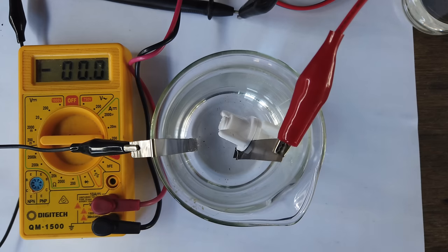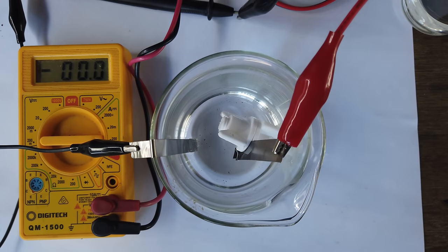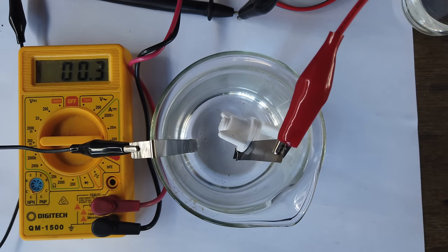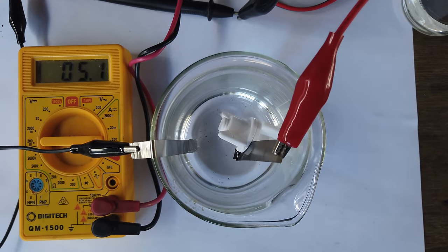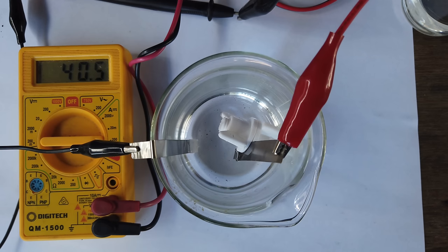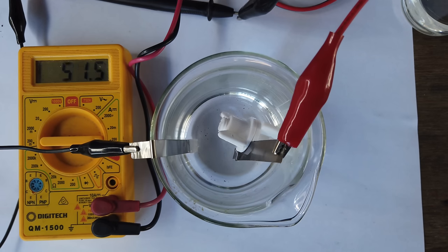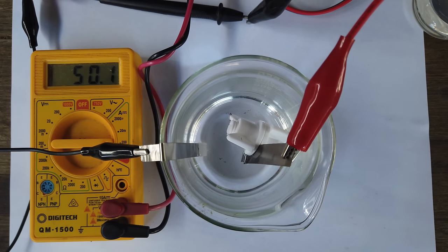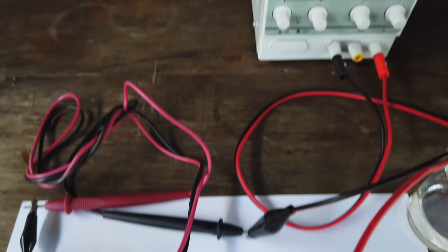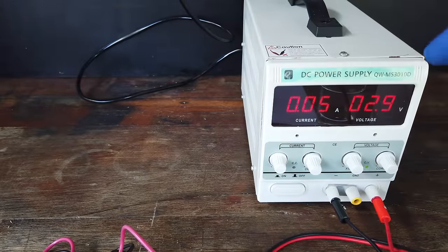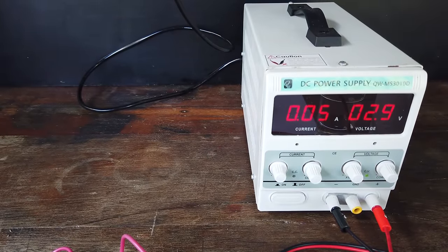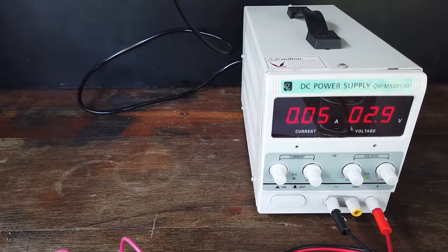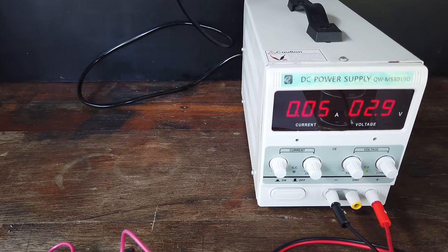And finally, the thing we actually want to test, the boron-doped diamond. Increasing the voltage one final time. All right, got it. Once again, checking the voltage. This time, we need a full 2.9 volts in order to get 50 milliamps to flow through the cell to get the reaction rate happening that fast.